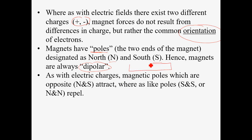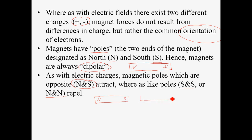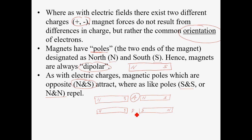Any magnet — whether a bar magnet or any other kind — will have one portion that is north and another that is south. It works similarly to electric charges: opposites attract, so north and south attract. If you bring the south ends of two magnets together, they repel, and so do two north ends. For example, if one magnet has north on the left and south on the right, and the second magnet also has north on the left and south on the right facing it, the opposite poles close to each other attract. If you flip the second magnet so the same poles are adjacent, they repel.